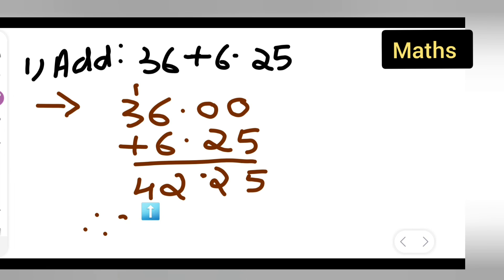Therefore, 36 plus 6.25 is equal to 42.25. 42.25 is your answer. So this is the way you have to add it. I hope you have understood, and thanks for watching.